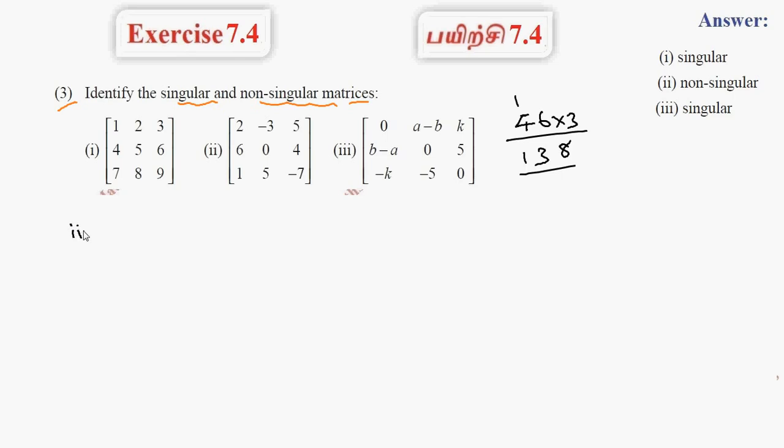Third subdivision. Third subdivision determinant 0: a minus b, k, b minus a, 0, 5, minus k, minus 5, 0.